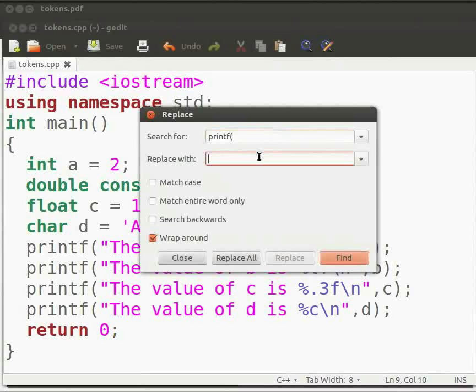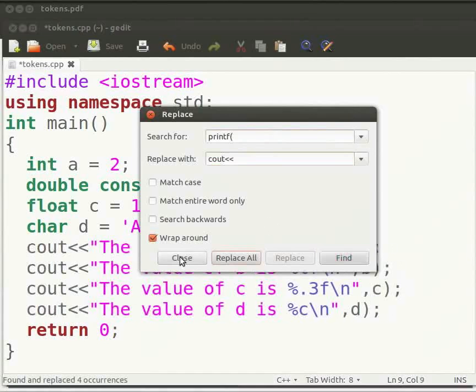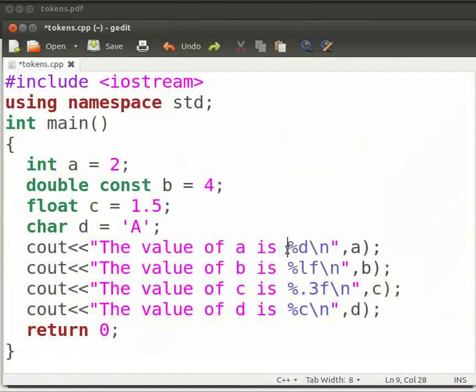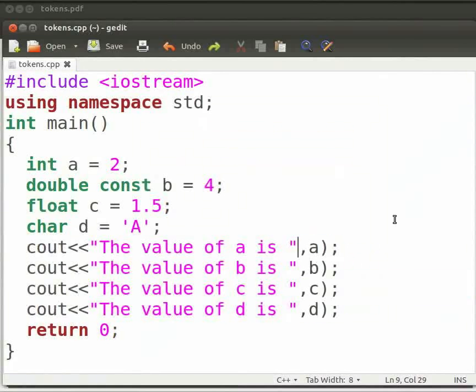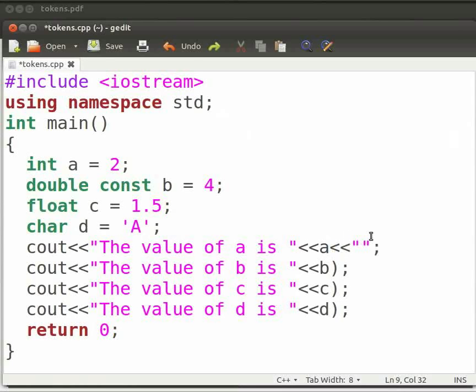And here in this column type cout and two opening angle brackets. We don't need the format specifier and backslash n. Let us delete them. Now delete the comma and type two opening angle brackets. And within the double quotes type backslash n. Now click on save.